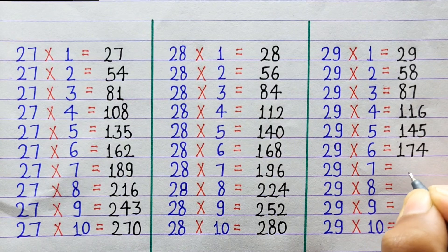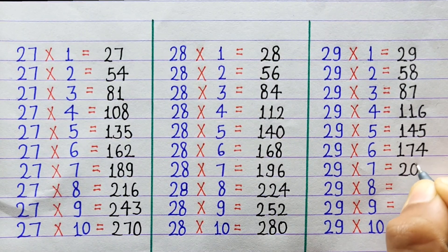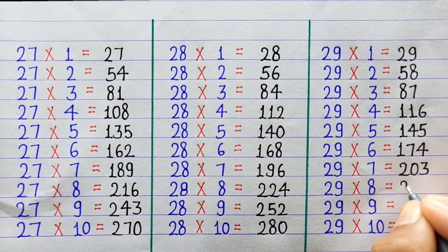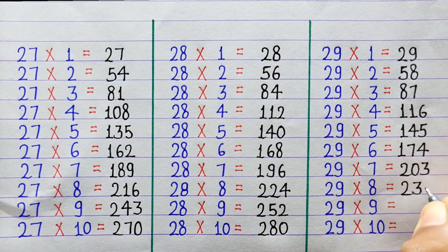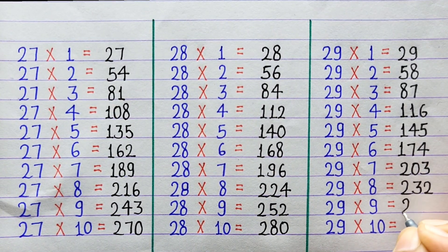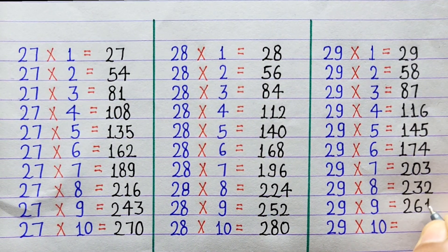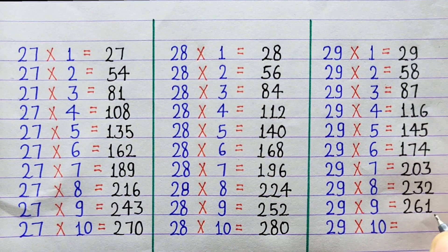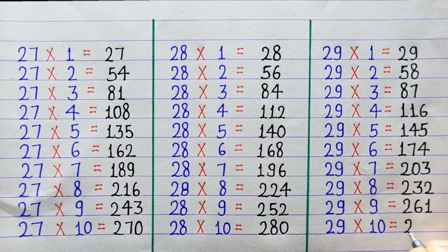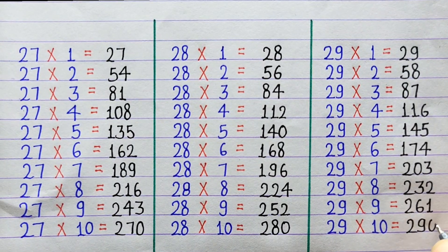29×7=203, 29×8=232, 29×9=261, 29×10=290.